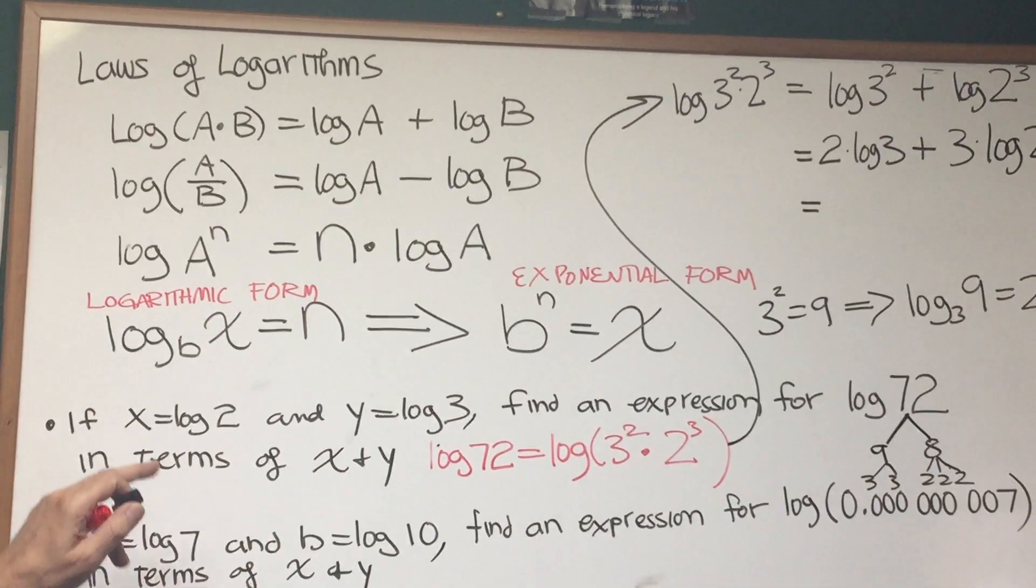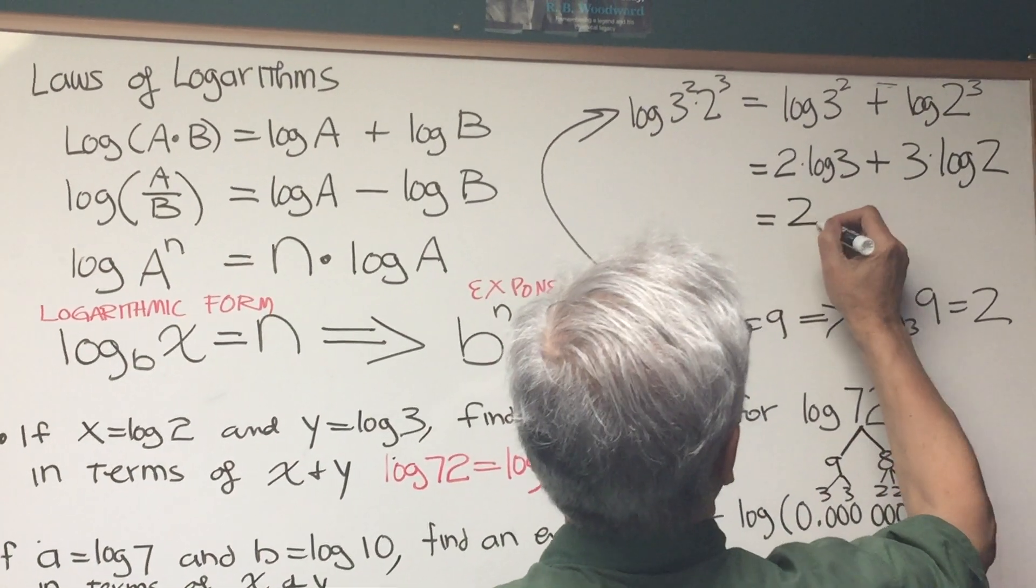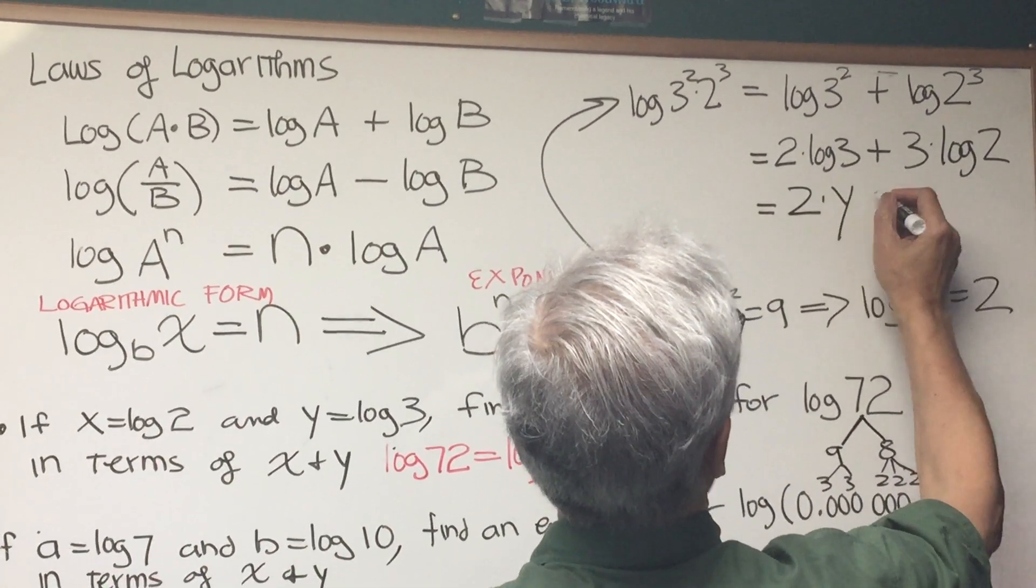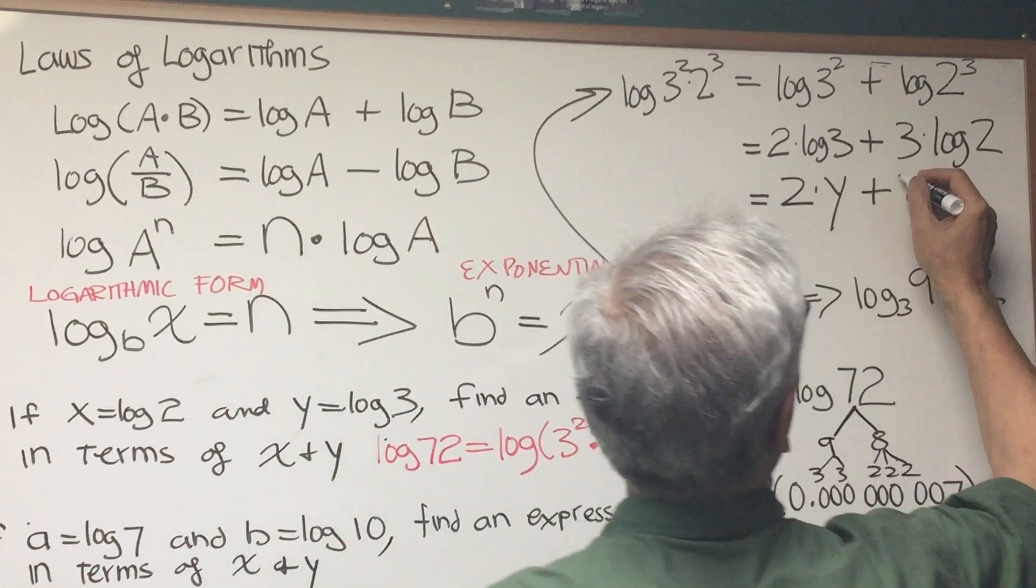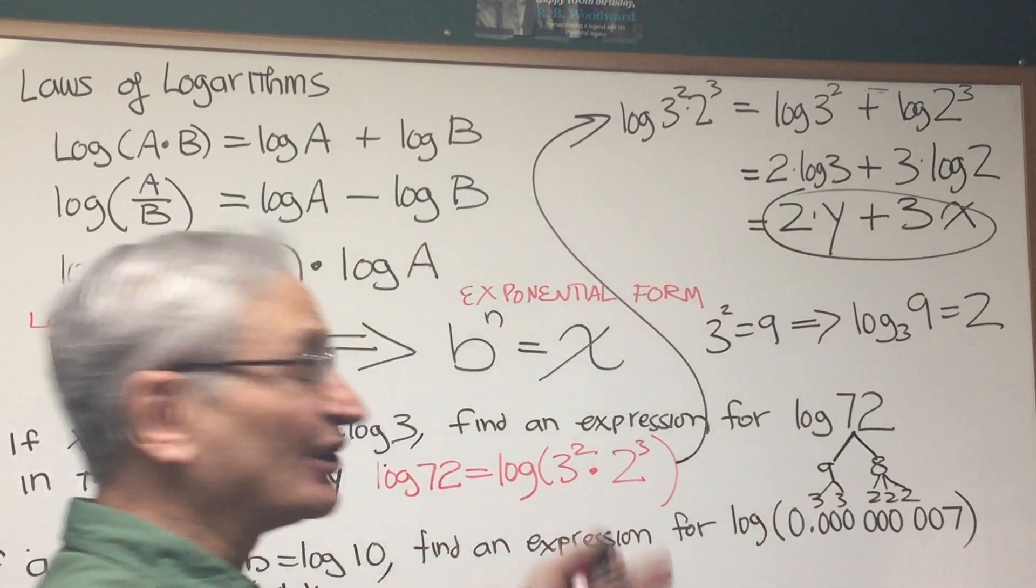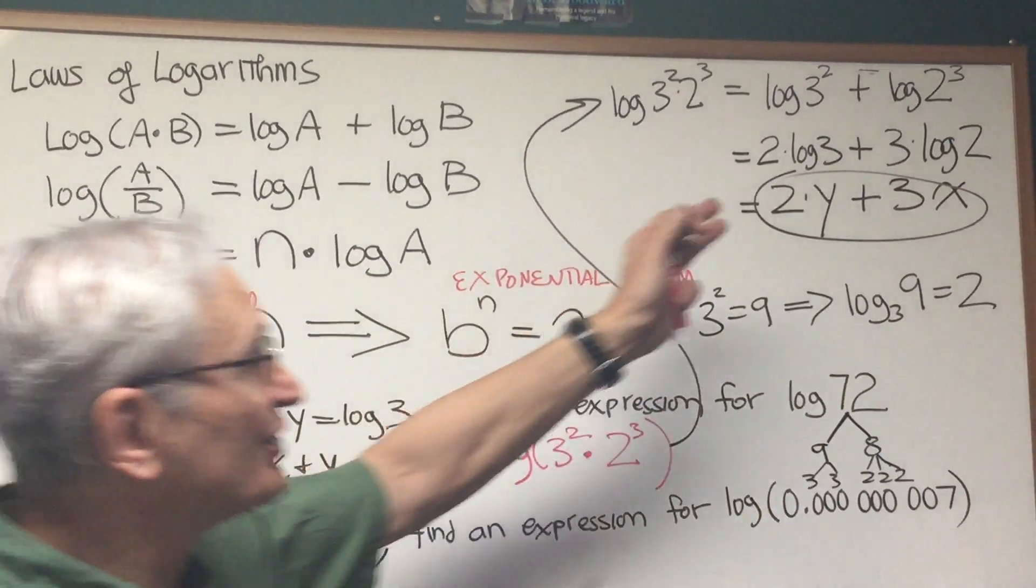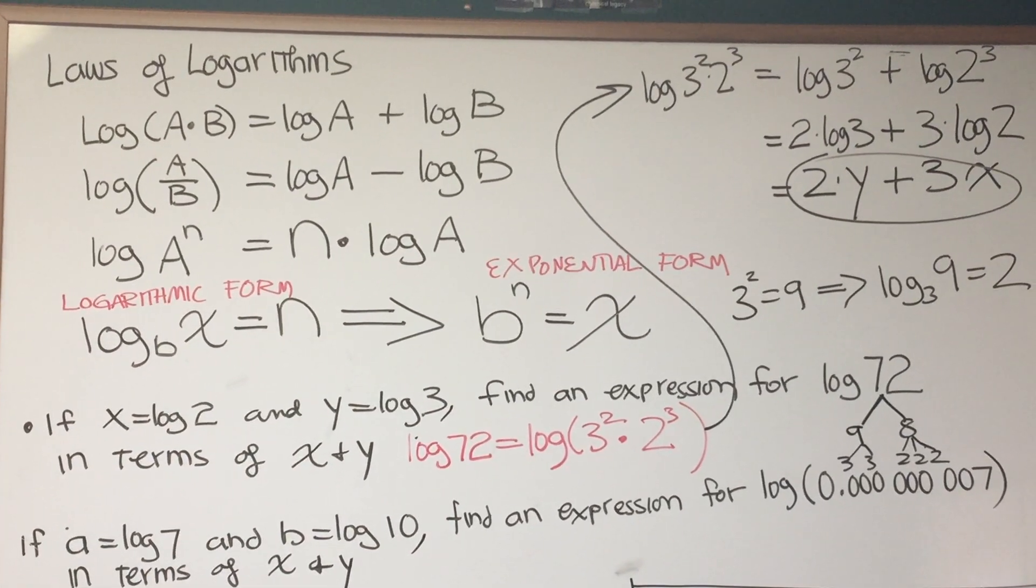Back to our original problem. Y is equal to log 3, so we can rewrite 2 times log 3 as 2 times y. And x equals log 2, so this is equal to plus 3x. So there is our expression. That's the log of 72 expressed in terms of x and y.